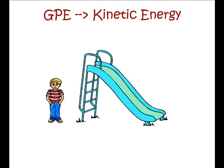I've got a boy who wants to climb up a slide and slide down it. We want to calculate his GPE first when he climbs up the slide, and then his kinetic energy conversion and what his velocity is at the end of the slide. The boy has a mass of 50 kilograms. In a GPE equation, we need to know what his weight is. Remembering on Earth, the weight is 10 newtons per kilogram, so his weight is 500 newtons.